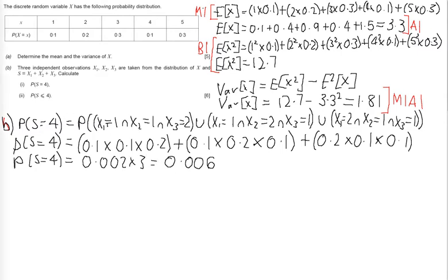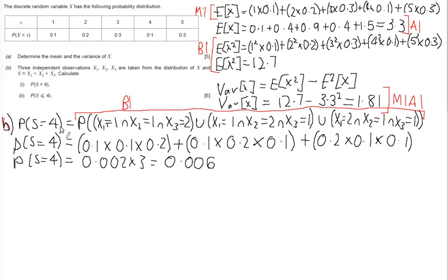For the marks on this question: first, you get a statement mark for showing there are three different ways of obtaining s equal to 4. Then you get a method mark and an accuracy mark for working through the steps and arriving at the answer 0.006. You need to show working — whether it's the individual probability products, the combined line, or both — and then your final answer.